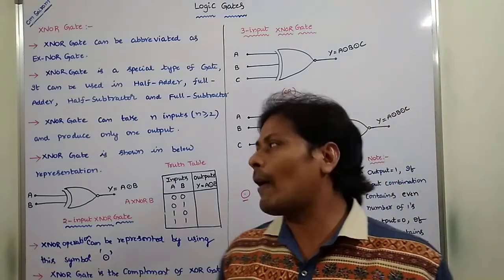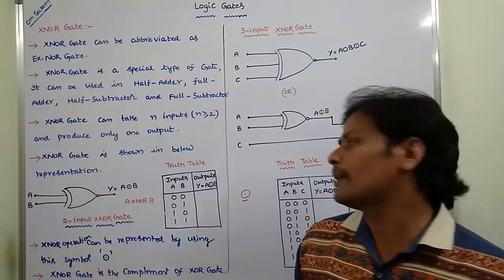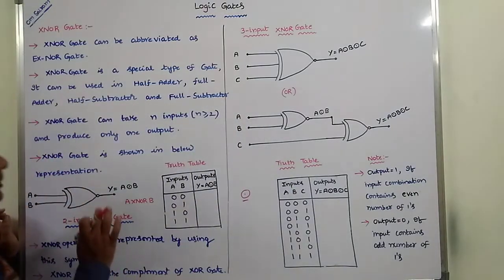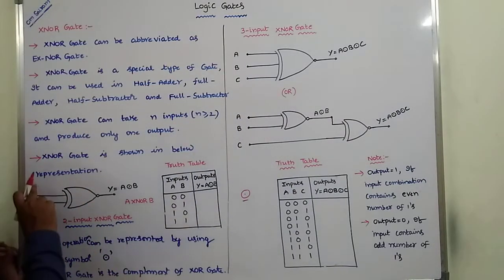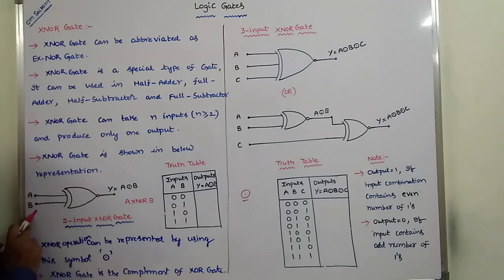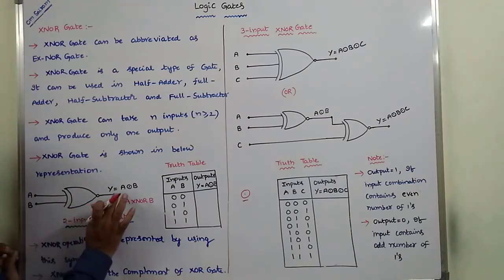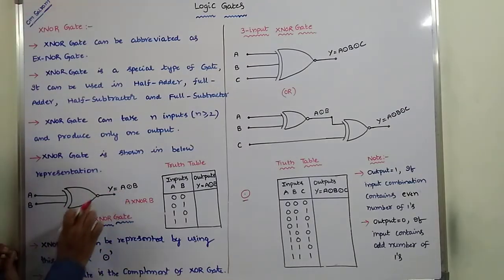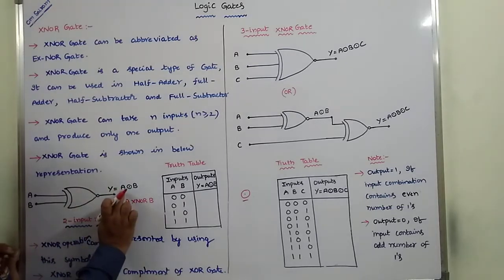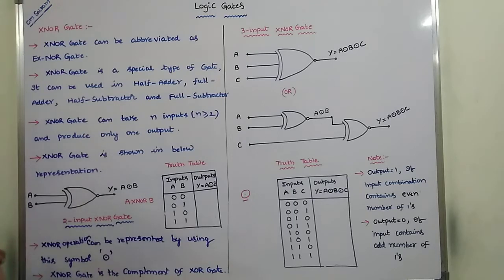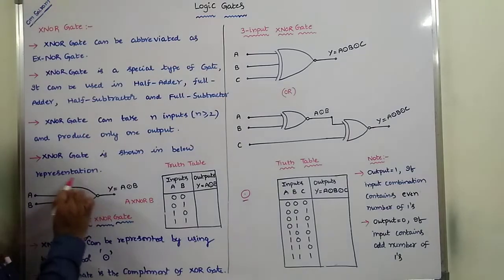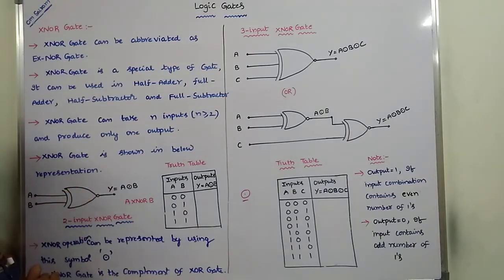Now the XNOR gate is shown in the figure below. It can take two inputs, A and B, which are applied to the XNOR gate. It produces only one output Y, where Y is equal to A exclusive NOR B. This is the symbol we use for the XNOR operation.